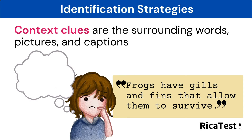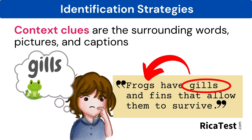The fourth strategy of word identification is using context clues by looking at a word's surroundings to decode the word. A person might use the words next to, above, or below, as well as pictures or captions that might also be on the page, in order to help understand what the text means.